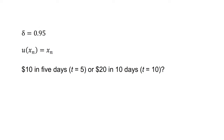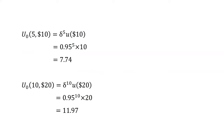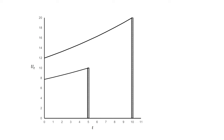What if the agent's discount rate is 0.95? In that case, the utility of $10 in five days, u0(5,10), equals delta to the 5 times u of $10, equals 7.74. The discounted utility of the $20 in 10 days, u0(10,20), equals delta to the 10 times u of $20, which equals 0.95 to the 10 times $20, equals 11.97. Discounted utility is higher for the $20 in 10 days; this agent will prefer to receive $20 in 10 days. When delta equals 0.95, the discount is less severe than when delta equals 0.75, and the $20 in 10 days has higher discounted utility than the $10 in five days.